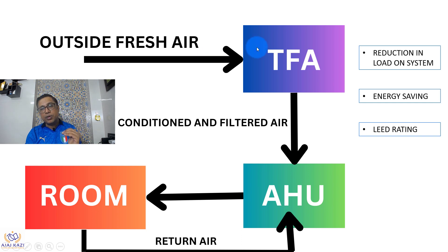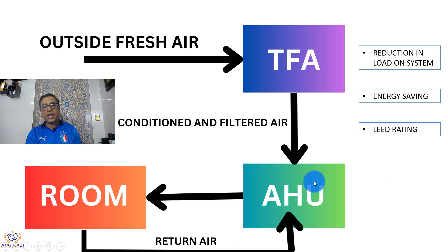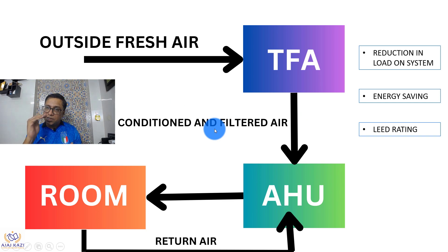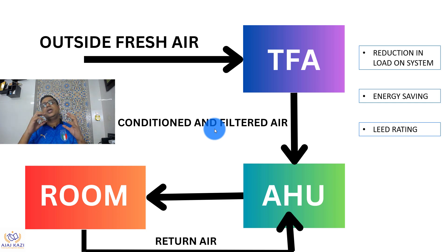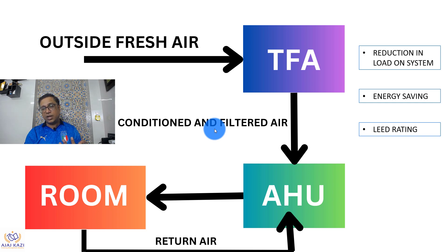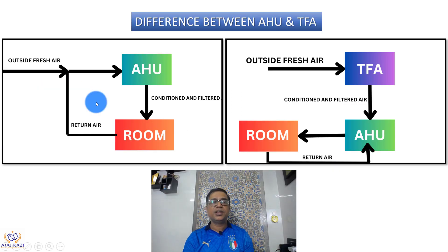In the AHU case, direct fresh air was coming in at high ambient temperature. Now I am pulling that air, conditioning it, filtering it, and then supplying it. So the fresh air which used to go directly into the filter is now coming pre-filtered and pre-conditioned. This results in energy saving. And in LEED rating, one point is gained by having a TFA — it is one of the important points in LEED rating. So this is TFA and the difference.